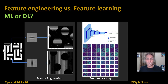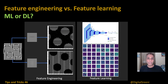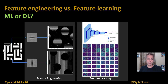On the left-hand side, we have feature engineering where we are designing what features we would like to extract. On the right-hand side, you have feature learning — where we just take the VGG16 pre-trained model and look at all the features from a specific layer. Let's jump into the code.